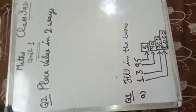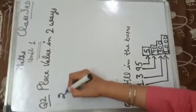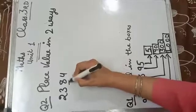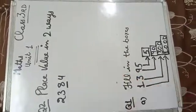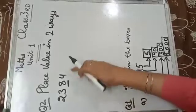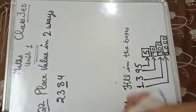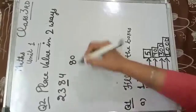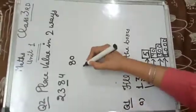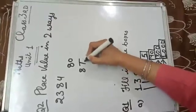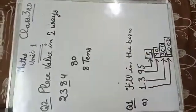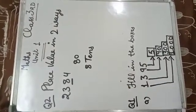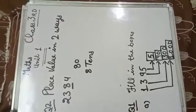For example, take the number 2384. We find the place value of the underlined digit. Here 8 is on the tens place, it means 80. The first way: place value of 8 is 80. The second way: we write 8 tens.